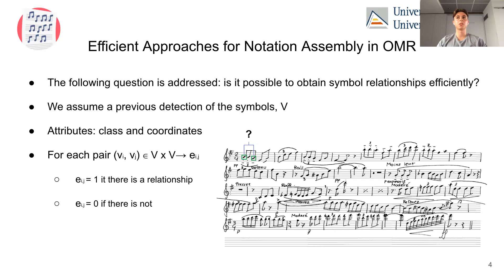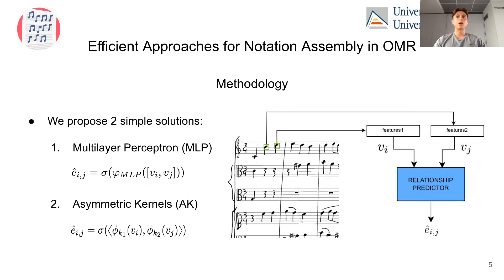In this work we are addressing the following question: is it possible to obtain symbol relationships efficiently? We assume a previous detection of the symbols, and concretely we have available the following attributes or features: class and coordinates. Then for each pair of nodes we predict one if there is a relationship or zero if there isn't.